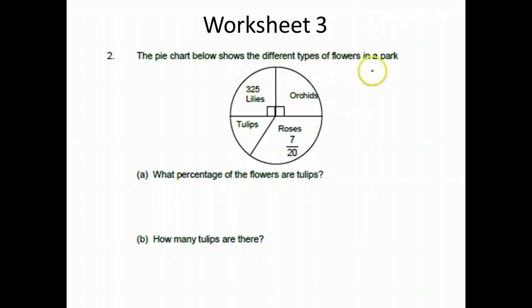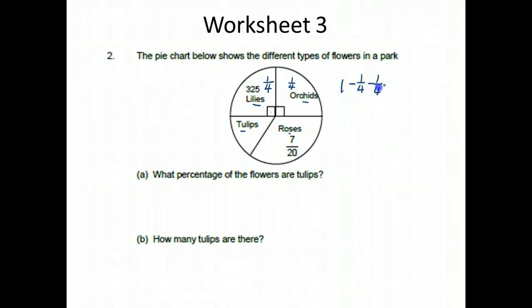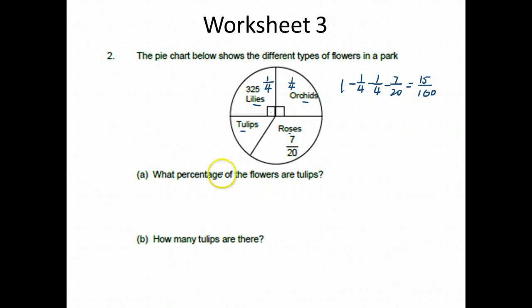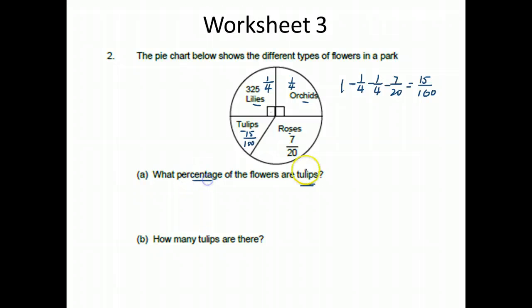Question 2. The pie chart shows the different types of flowers in a park: lilies, orchids, tulips, and roses. Roses is shown as one quarter, and lilies is also one quarter. Roses is 7/20. To find the tulips, I take 1 whole minus one-quarter minus one-quarter minus 7/20, and I get 15 out of 100. So tulips is 15 out of 100, which as a percentage is 15 out of 100 times 100%, giving 15%.